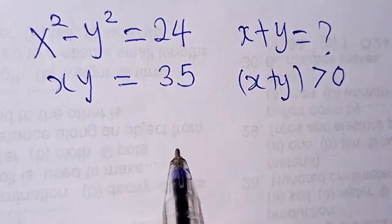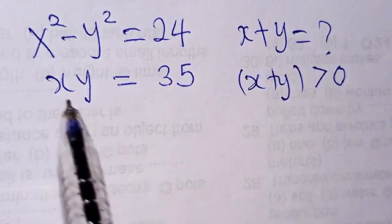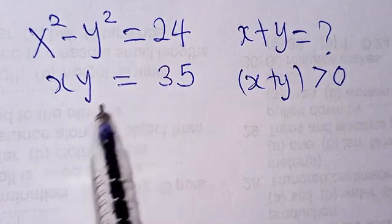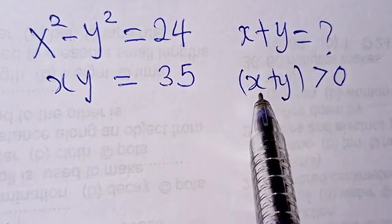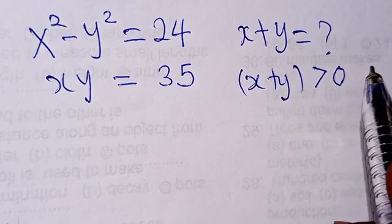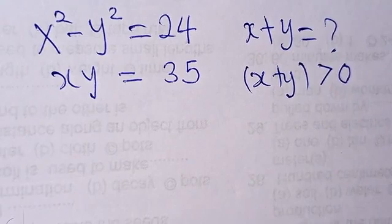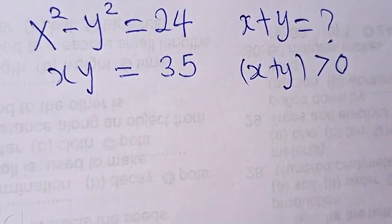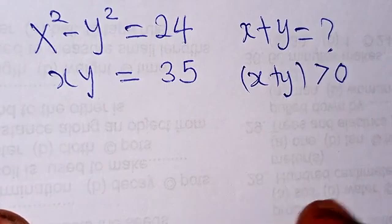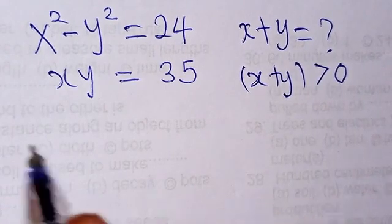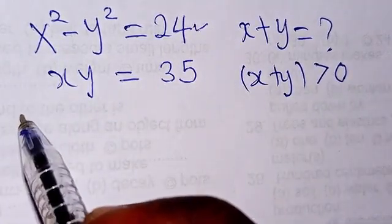Hello, good viewers, you are welcome. Let's see how we are going to solve this Olympiad problem. We have x squared minus y squared equals 24, and xy equals 35. What is the value of x plus y, given that x plus y is greater than zero? We have actually solved something like this before, so now we are having another solution.